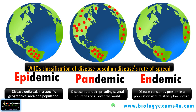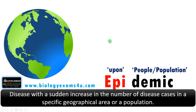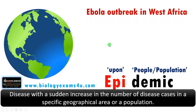Let's begin with epidemic. The word origin: 'epi' means upon, whereas 'demic' or 'demos' means people or population. An epidemic is a disease with a sudden increase in the number of cases in a specific geographical area or population. It is also called a disease outbreak in a specific geographical area or population.